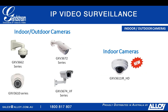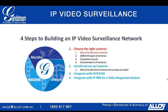We'll get more into the specific camera models later. These are the five models we're focusing on today: four outdoor cameras and our new indoor camera, the GXV3611 IR HD. The agenda follows a simple four-step process for installing a video surveillance network. We'll start with choosing the right cameras, then touch on installation, the features that make installation easy, and wrap up by talking about integration with our network video recorder and IP PBX.